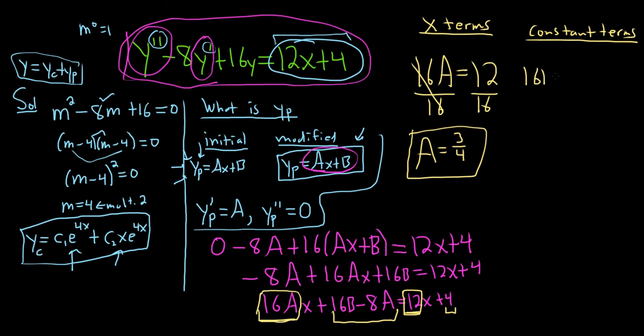So 16b minus 8a equals 4. We don't know b, so 16b is just 16b. a is 3 fourths, and that's equal to 4.